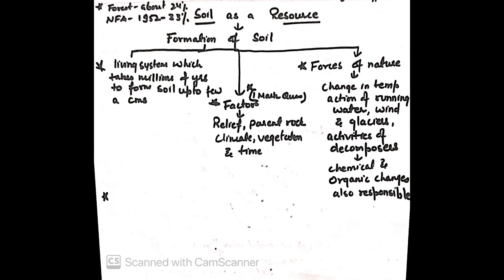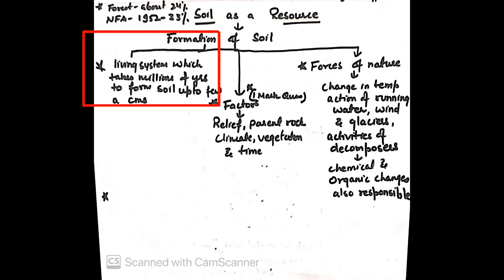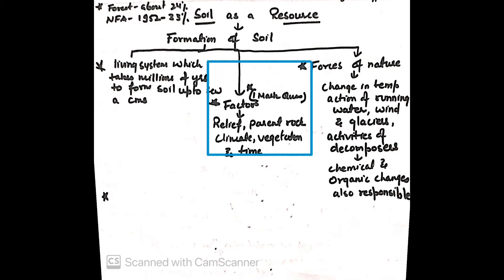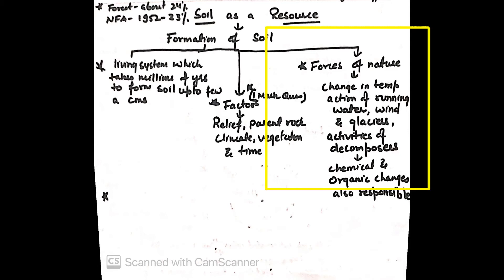Formation of soil is a living system which takes millions of years to form soil up to a few centimeters. Factors responsible for the formation of soil are relief, parent rock, climate, vegetation and time. Forces of nature like running water, wind and glacier are also responsible for its formation. Activities of decomposers, chemical and organic changes are also other factors.